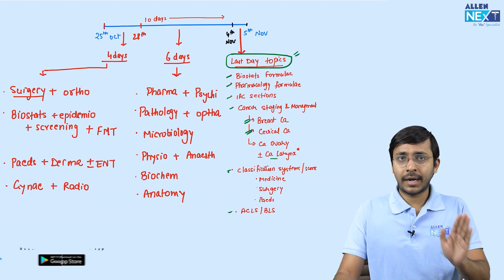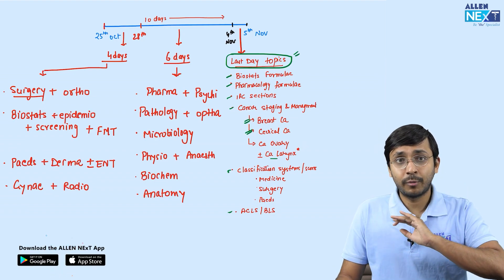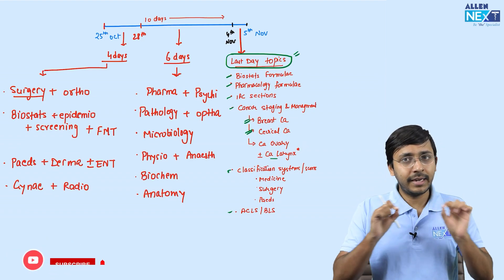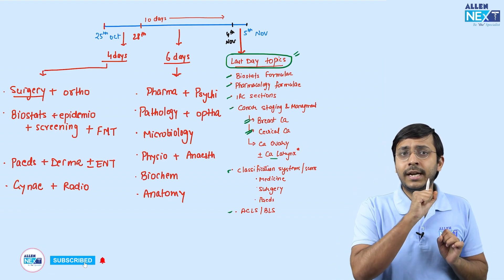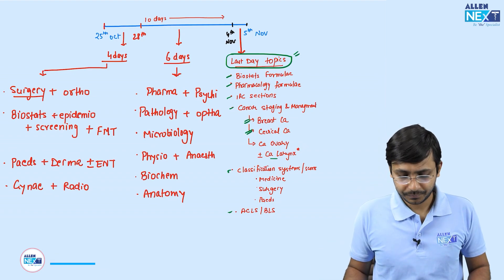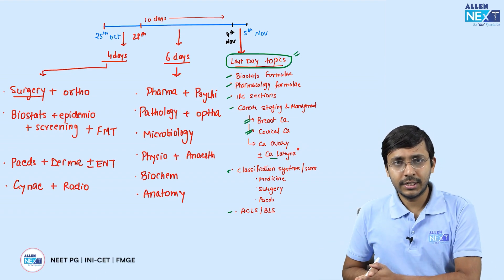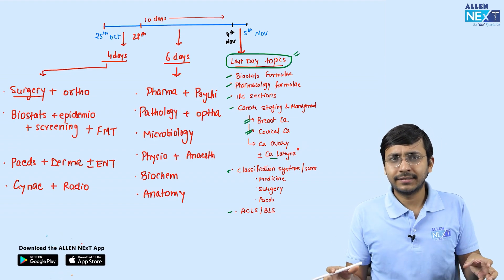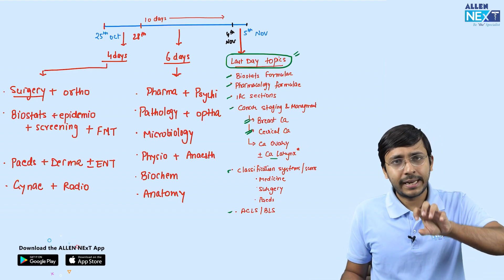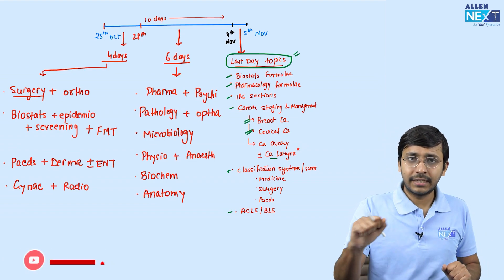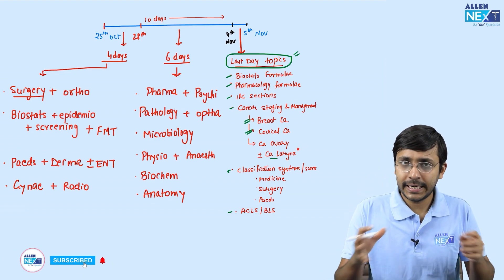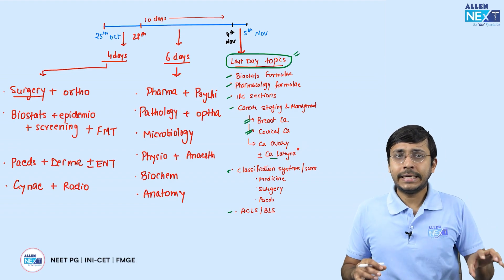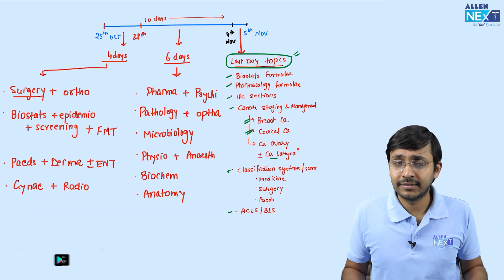Next comes Microbiology — I haven't integrated any minor with it because it is a very very important subject. You'll get around 15 questions from Micro. Then comes Physiology integrated with Anesthesia — around eight to ten questions come from Physiology and four to five from Anesthesia, so you can combine them comfortably.